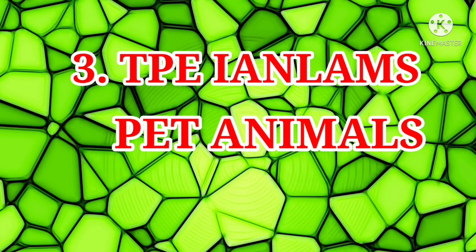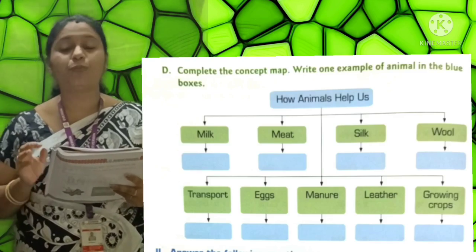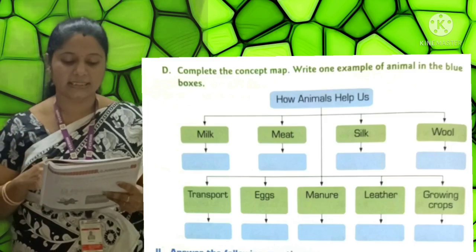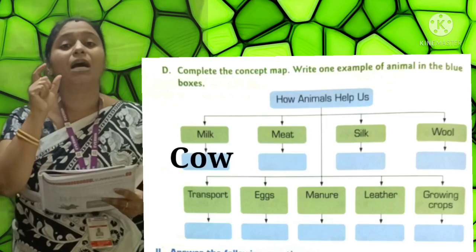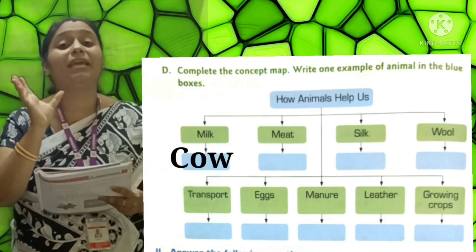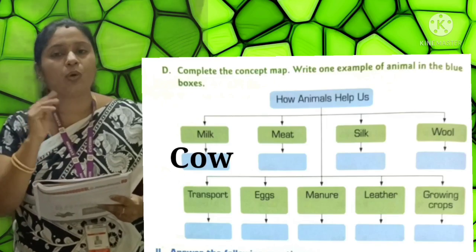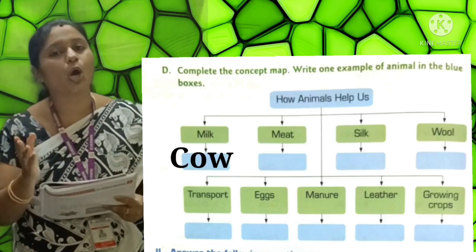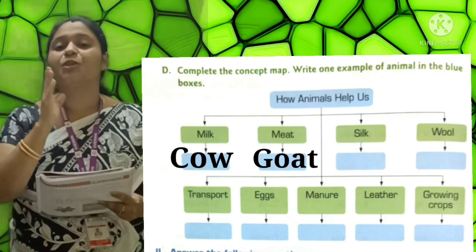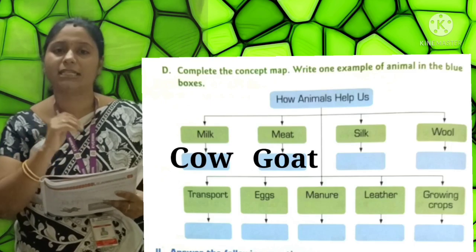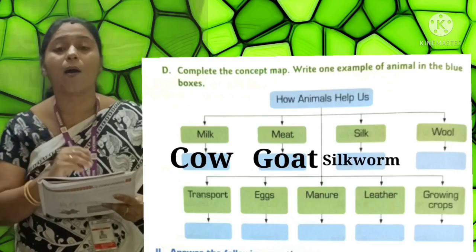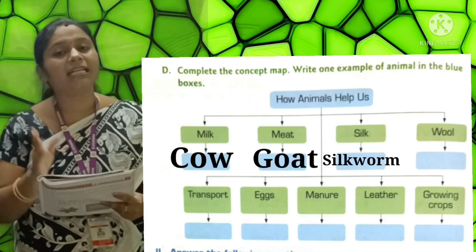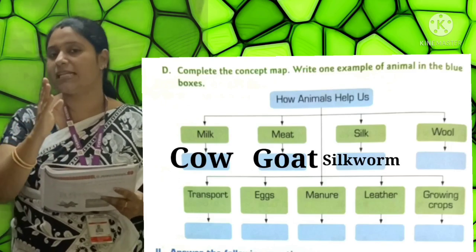Now complete the concept map: Write one example of animal in each box. How animals help us - Milk: Cow (C-O-W). Meat: Goat (G-O-A-T). Silk: Silkworm (S-I-L-K, W-O-R-M).